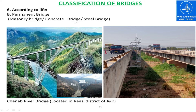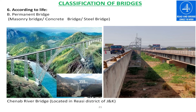A permanent bridge may be a masonry bridge, concrete bridge, or steel bridge. Here you can see the Chenab River Bridge, whose project is still running and may be completed in upcoming years. This bridge makes a world record — it will be the world's highest railway bridge, located in India, and is known as the Chenab River Bridge.